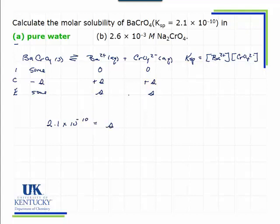The chromate's concentration is represented by an S, so that would be S squared. And that would give me a molar solubility of 1.4 times 10 to the minus 5.